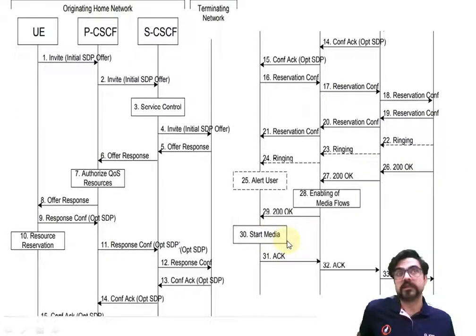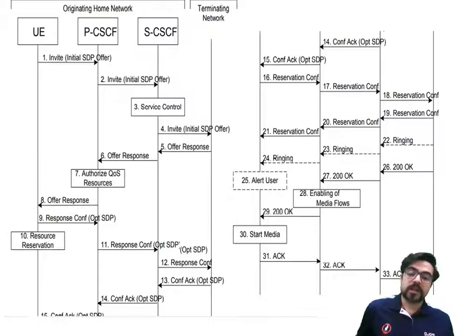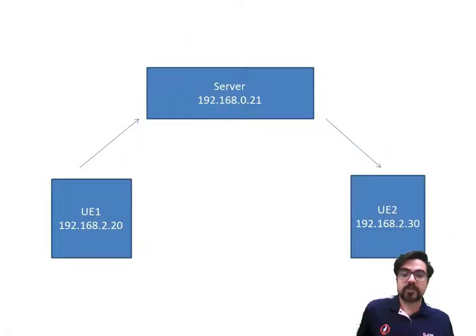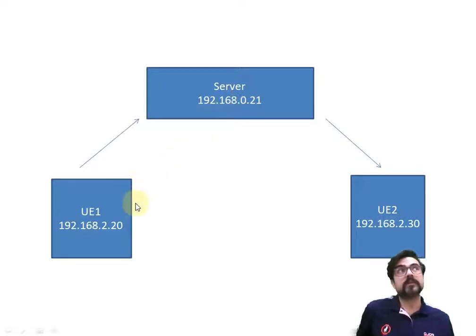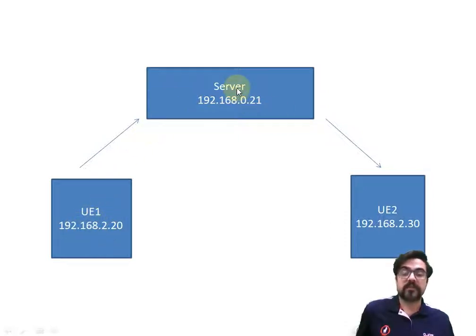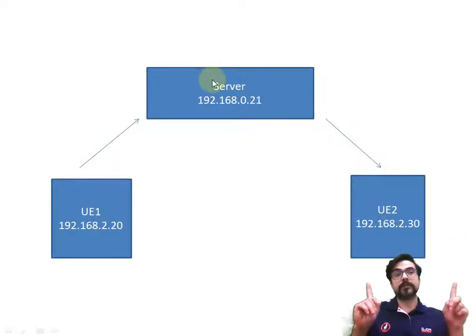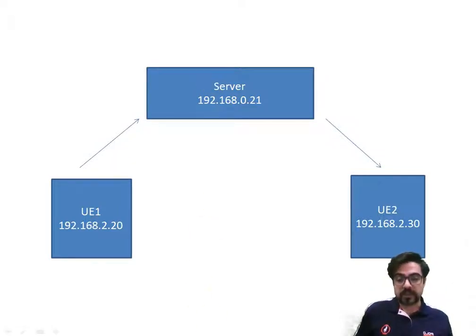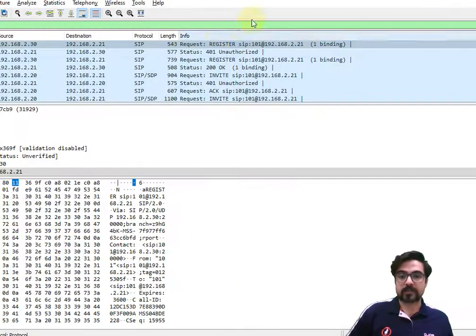A 200 OK means the call has started. Looking at just diagrams may not make full sense, so let's look at some captured packets. This is not for LTE but for a SIP server and media setup to make things clearer. We have UE1, UE2, and a server at address 21. All communication goes through the server — they don't communicate directly with each other.